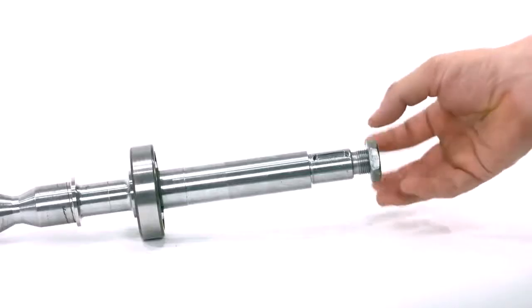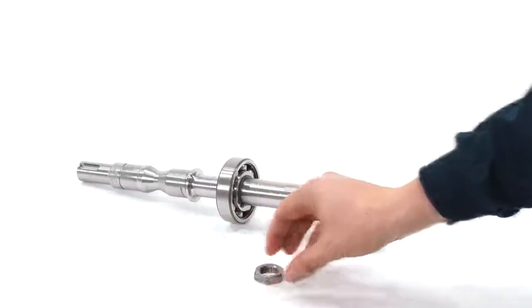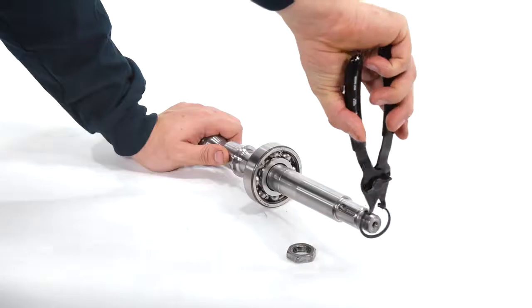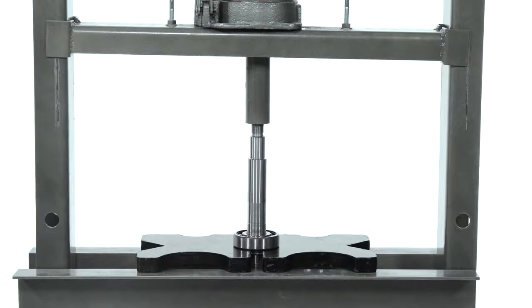Remove the nut from the shaft. Using a pair of snap ring pliers, remove the snap ring that holds the bearing in place on the shaft. Remove the bearing from the shaft using a press.